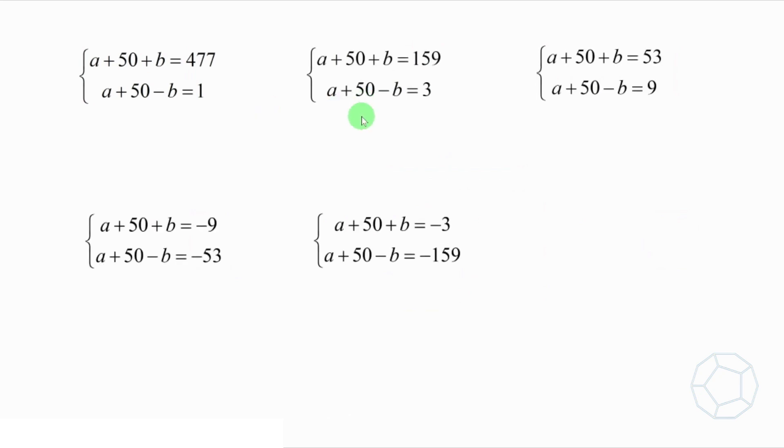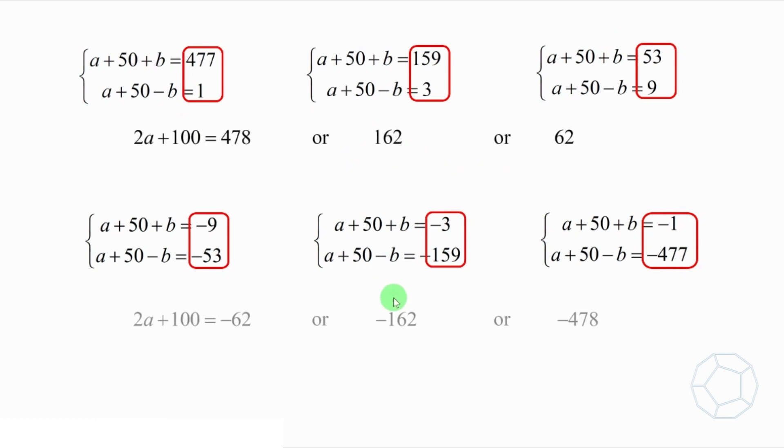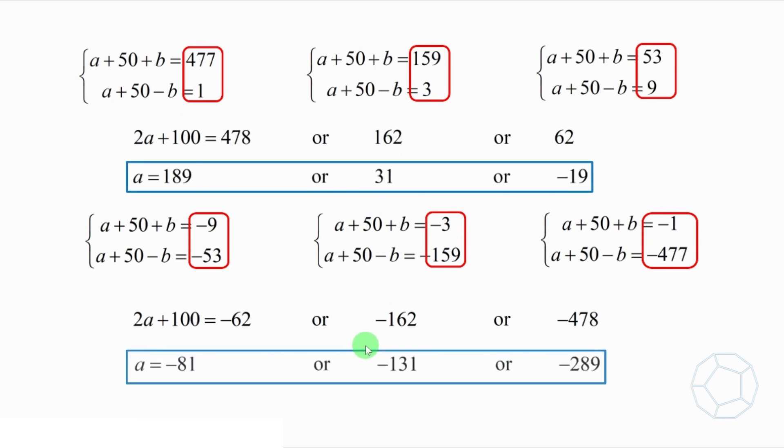In total, we get the six systems of linear equations in a and b, which are shown on the screen now. Just like what we mentioned, we add up the two equations for each system, then we get the six linear equations. Solving each of them, we've got the six solutions of a.